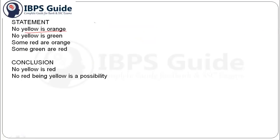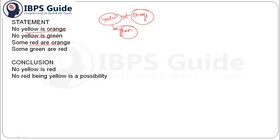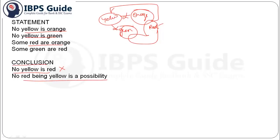Next question: 'No yellow is orange', 'No yellow is green', 'Some red are orange', and 'Some green are red.' Conclusion one: 'No yellow is red.' Yellow is here and red is here — can we draw any definite relationship? No, we can't, so this doesn't follow. Conclusion two: 'No red being yellow is a possibility.' Yes, this is a case of negative possibility — possibility becomes true as there is no direct relationship between yellow and red. So this conclusion becomes true.